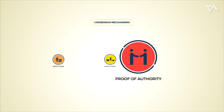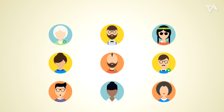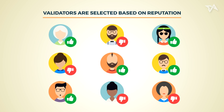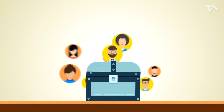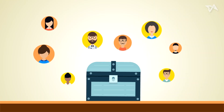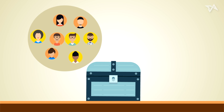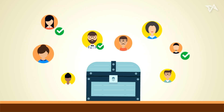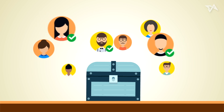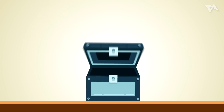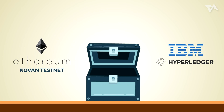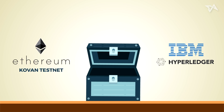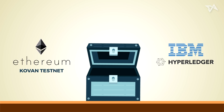Lastly, proof-of-authority — a modified form of proof-of-stake. Here, only approved parties selected based on their reputation can become validators. Let's revisit the treasure chest scenario: the group of treasure hunters form a union and pool their treasures. Based on their level of trustworthiness, a select few are appointed by the group to ensure the validity of the chest's content. IBM's Hyperledger Fabric and Ethereum's Kovan Testnet are some examples of blockchain systems that use proof-of-authority.